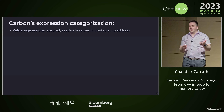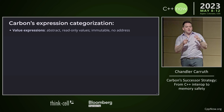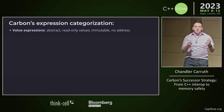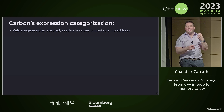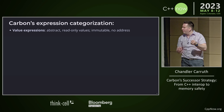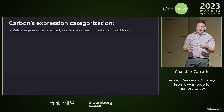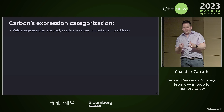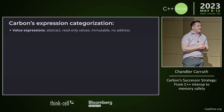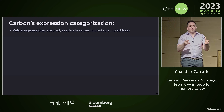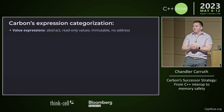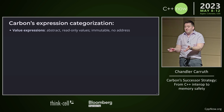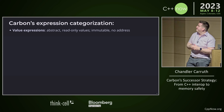The first expression category are value expressions. These are your bread and butter — read-only, immutable, abstract values. Like, it's almost like a value in math. There's not even an address; you can't take the address of these things. This is kind of like the number 42. You can write 42 in your source code — it doesn't have an address. It's a value expression.